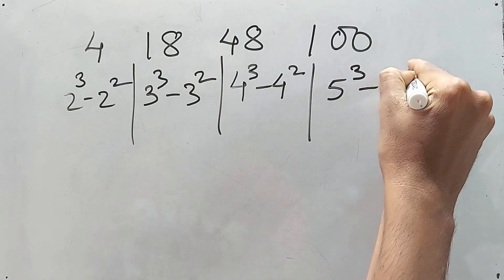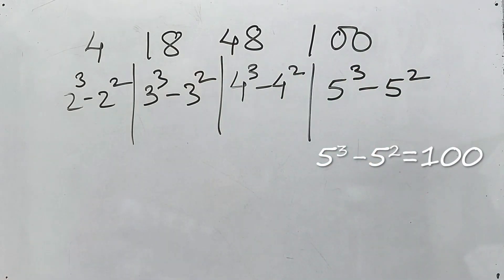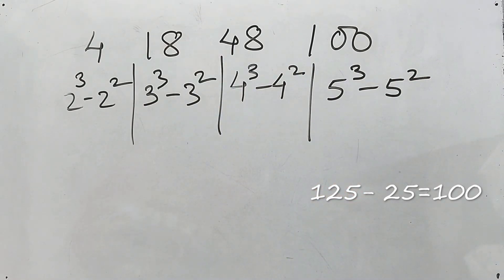And last but not the least, that is 100. Again the same thing: 5 cube minus 5 square. 5 cube is 125 and 5 square is 25. 125 minus 25 is 100, right?